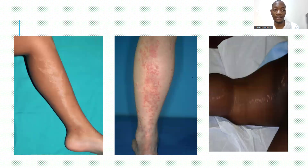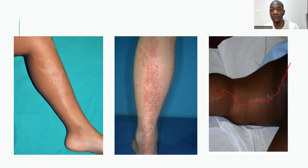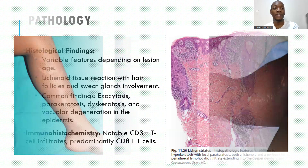This is how the clinical picture looks — verrucous papules and plaques along Blaschko's lines of development. As you can see here, they follow this line all the way through to the limb.